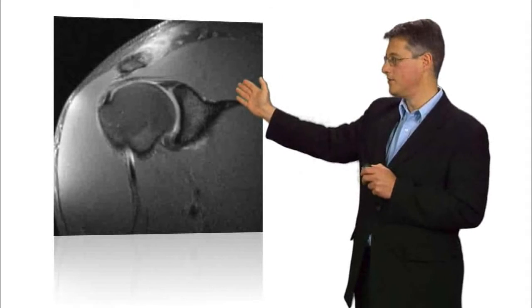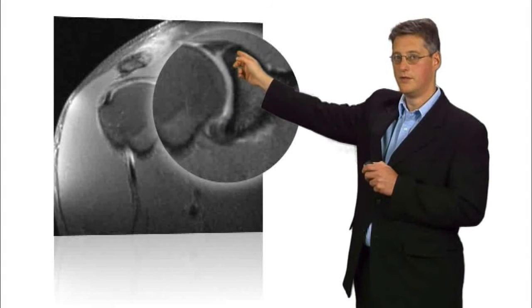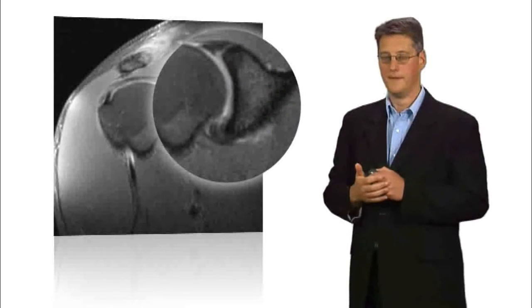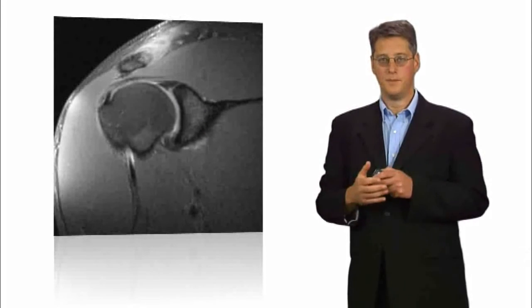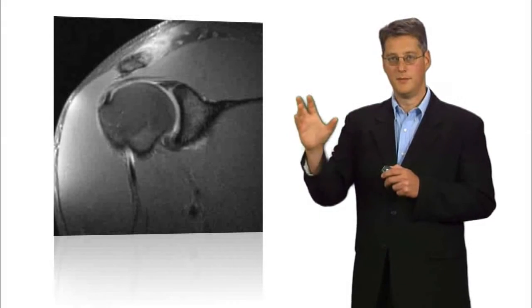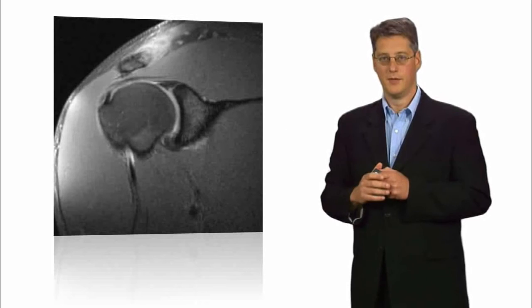Here you see an image of an MR arthrogram with a SLAP tear right at the top here in this triangular area where you see some dye running up here. The arthrogram is a procedure where dye is injected into the shoulder and then images are taken of the shoulder on a CT or an MR scan.